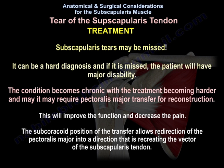Subscapularis tears may be missed and can be a difficult diagnosis. If missed, the patient will have major disability. The condition becomes chronic with treatment becoming harder, and may require pectoralis major transfer for reconstruction to improve function and decrease pain. The subcoracoid position of the transfer allows redirection of the pectoralis major to recreate the vector of the subscapularis tendon.